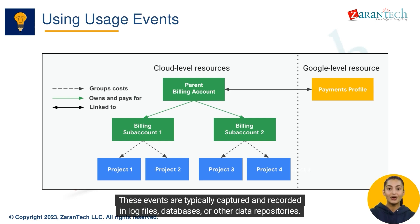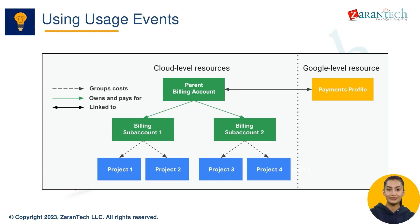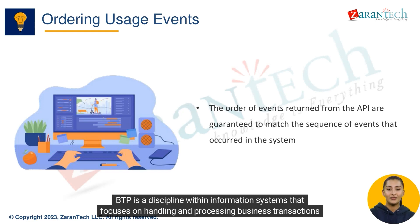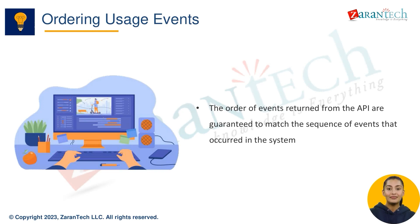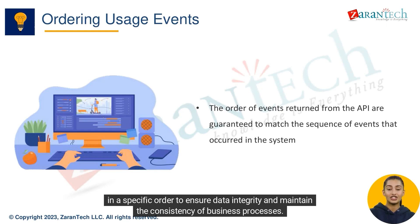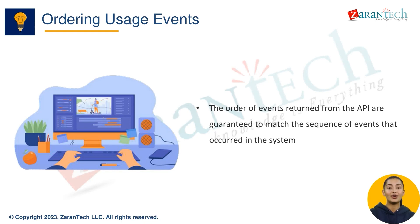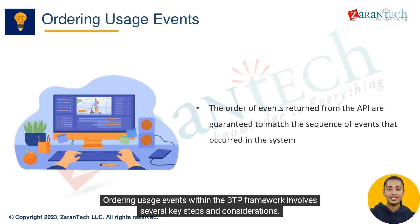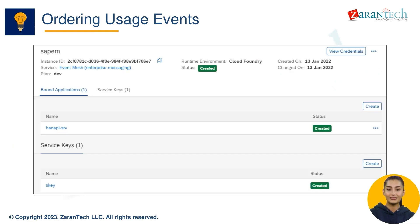These events are typically captured and recorded in log files, databases, or other data repositories. BTP is a discipline within information systems that focuses on handling and processing business transactions in a reliable and consistent manner. Ordering usage events within the BTP framework involves several key steps and considerations.